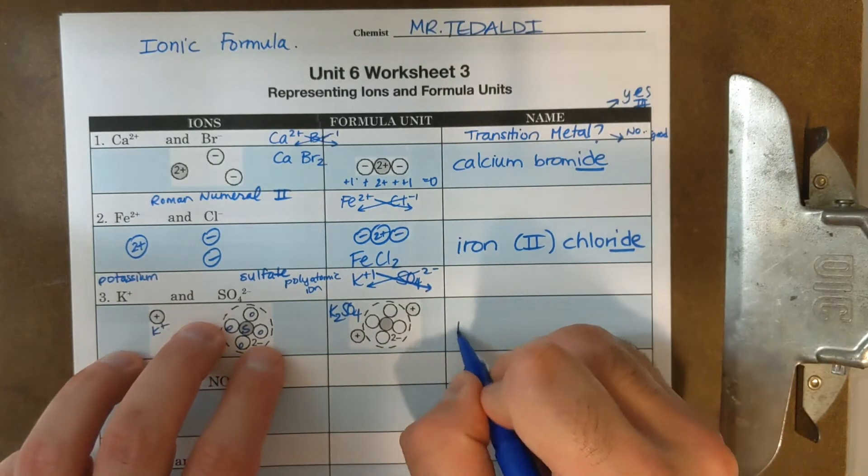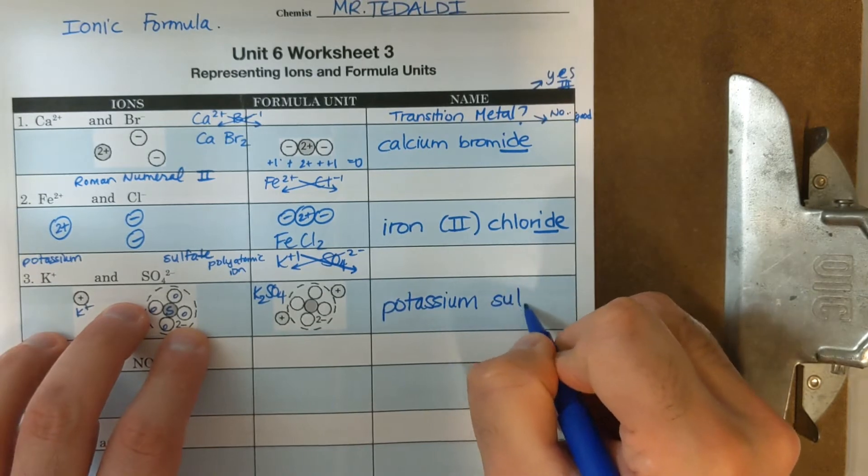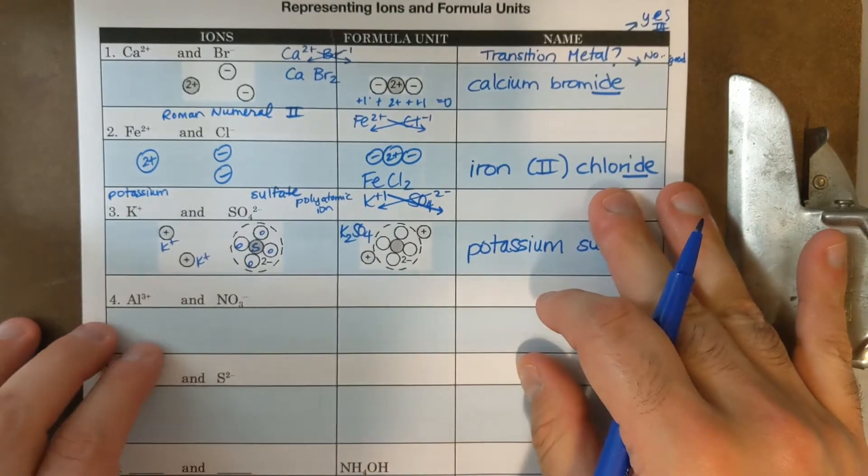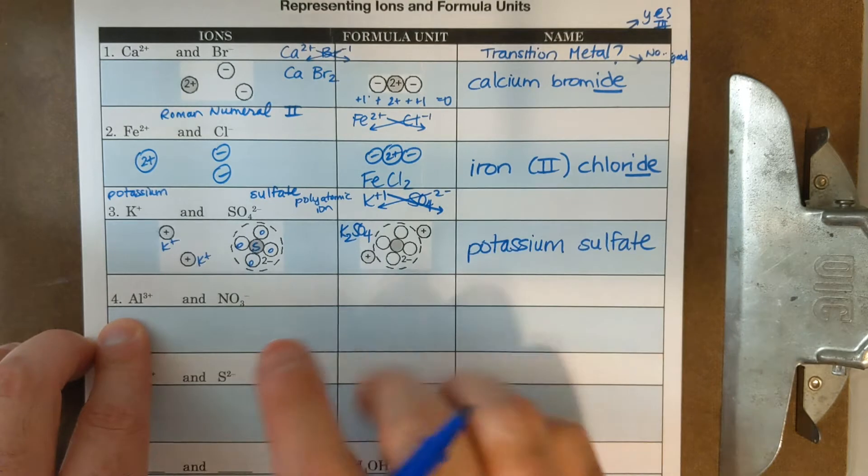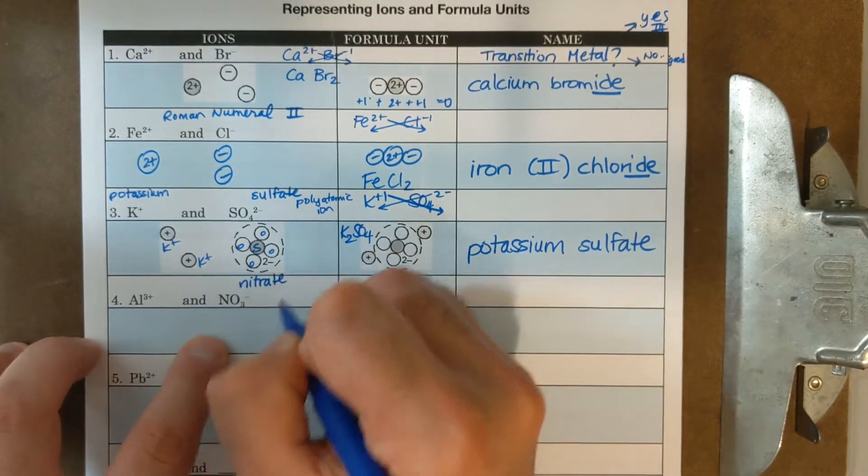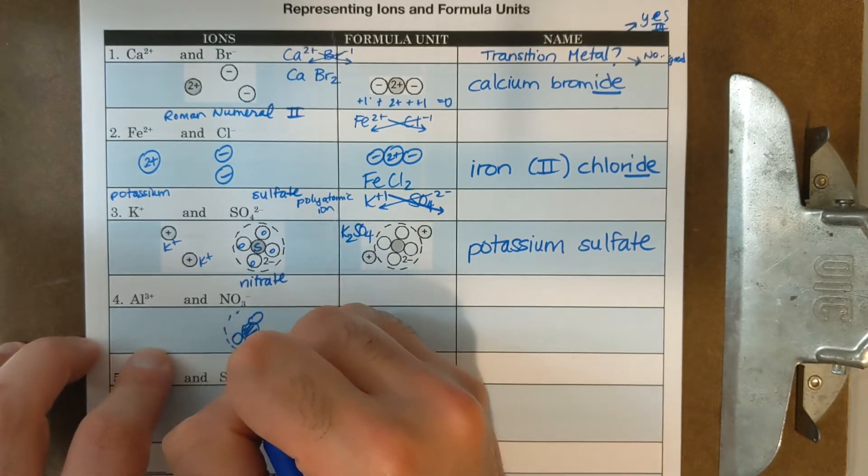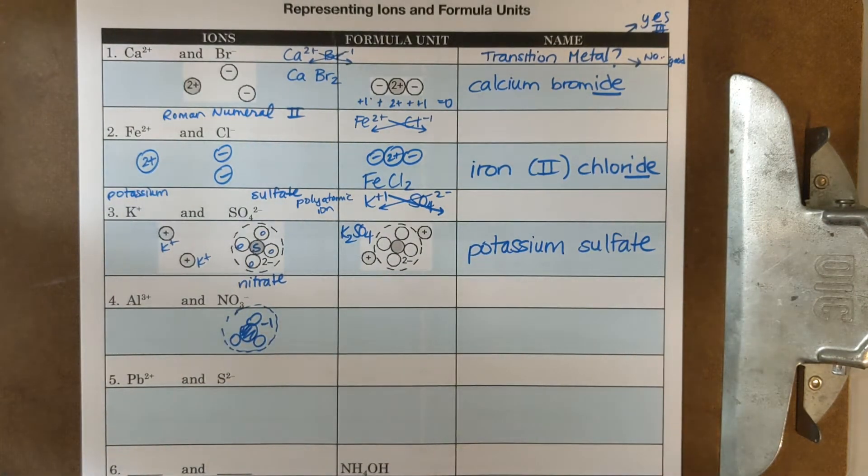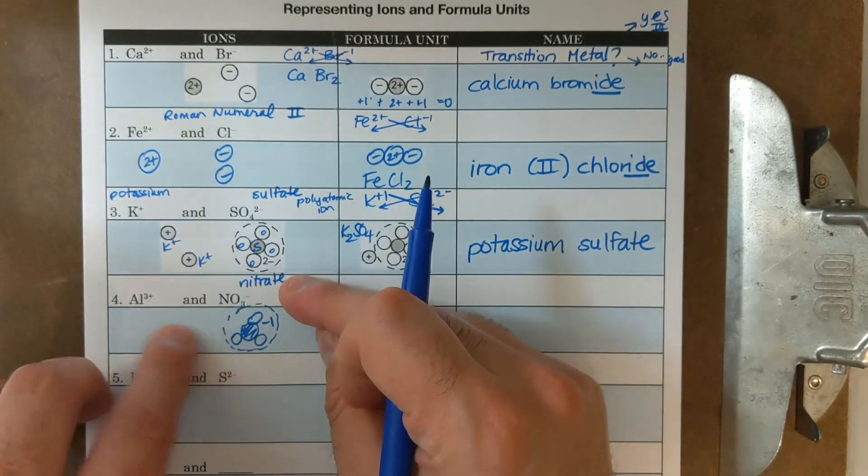And so if I wanted to name this, I'm not going to need a Roman numeral. It's going to be potassium. And I name the polyatomic ion as is sulfate. In getting you started on drawing the next one and kind of helping you out, aluminum is not a transition metal. Not going to need a Roman numeral. And the way that I'll draw NO3, which is named nitrate. It's got a minus one charge. I'll draw an N and three O's and probably put a dotted line and make it minus one.